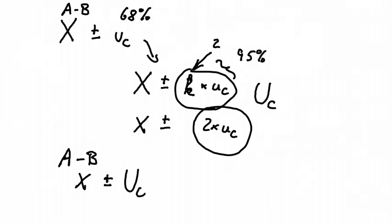the difference between A minus B is X plus minus Uc. That's the extended combined uncertainties. It's no longer a standard uncertainty. It's a combined extended uncertainty. And we would need to indicate what coverage factor we used. So in this case, we used k equals 2.